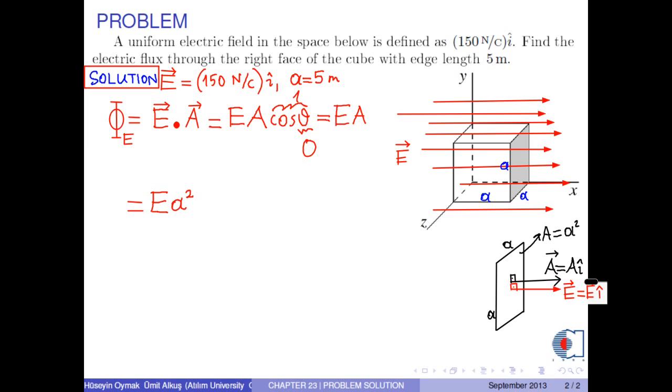Now we substitute the numerical values into this formula: 150 N per Coulomb times 5 meters squared.